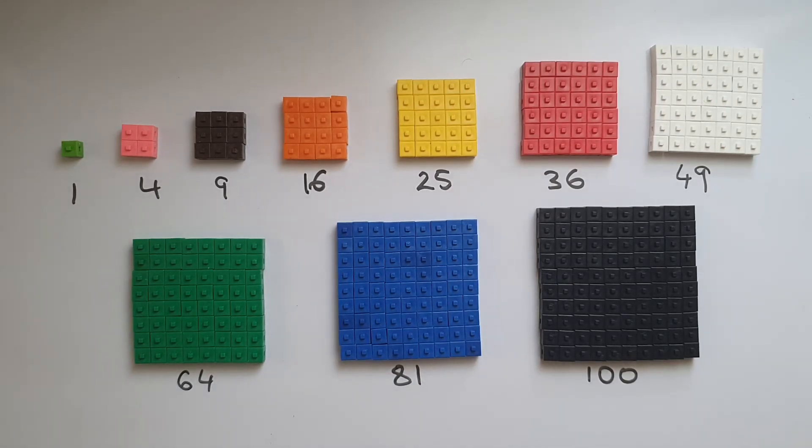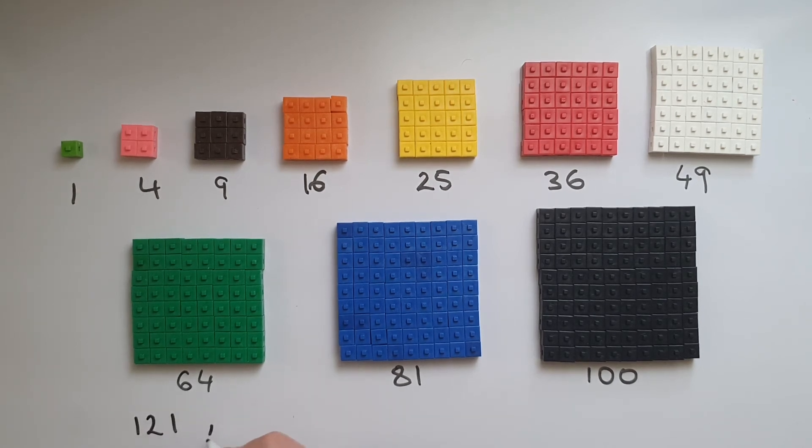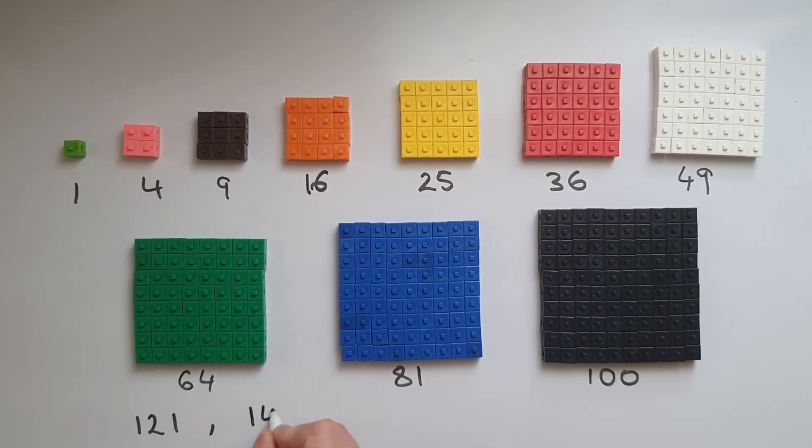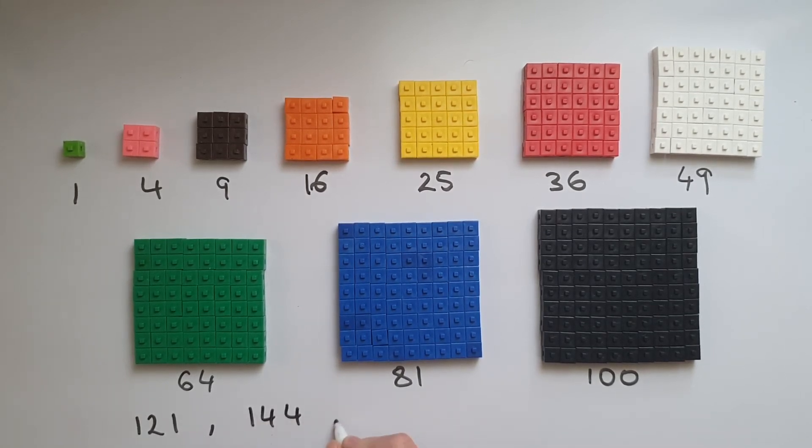Other square numbers which you need to recognise and know by heart are 121 which is 11 times 11, 144 which is 12 times 12.